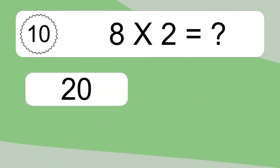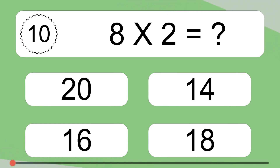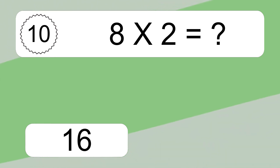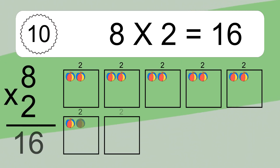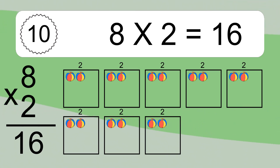8 times 2 equals what? 8 times 2 equals 16. We have 8 boxes and each box has 2 colorful balls inside. If you count all the balls in all the boxes together, you will have 8 times 2 balls. This equals 16 balls.